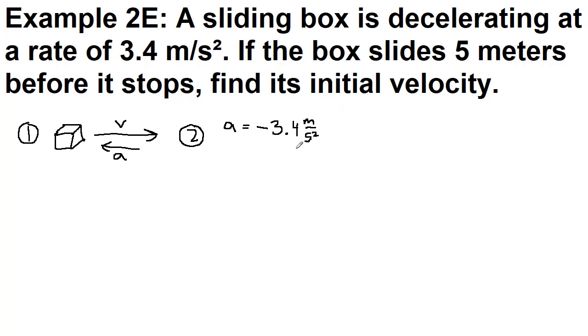Now we're told that the box slides five meters before it stops. So at some initial zero point, it was moving, and then at five meters, it's not, which means that the final velocity is zero meters per second. And that's because of the word stops. And the initial position is zero meters. And finally, the final position is five meters. All of this information is in the first sentence and a half of the problem.